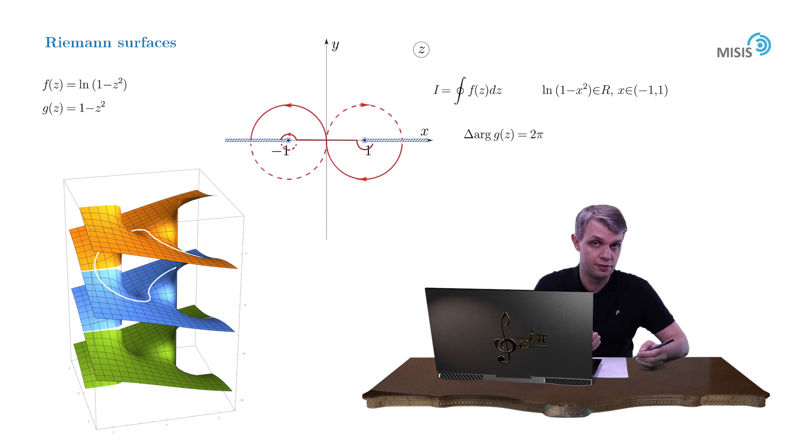Simultaneously the second arc of the contour positioned on the Riemann sheet below is shrunk into the same linear segment again going from negative 1 to 1.